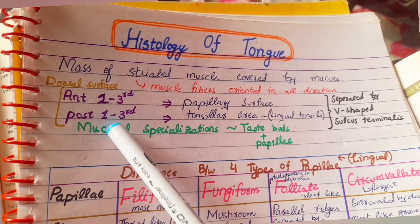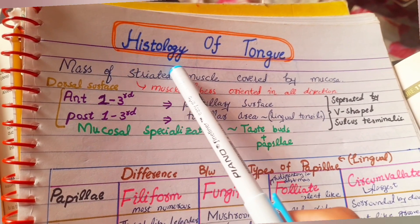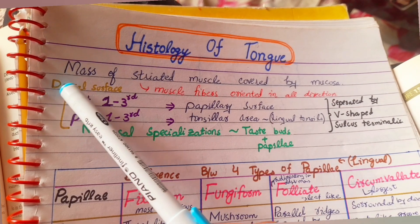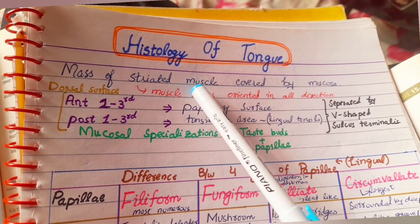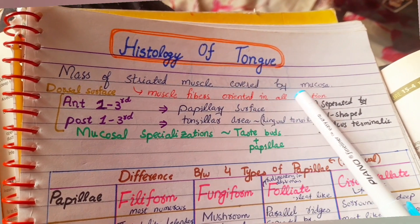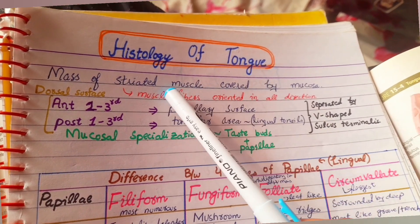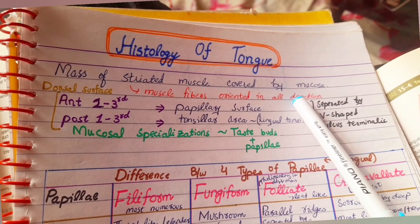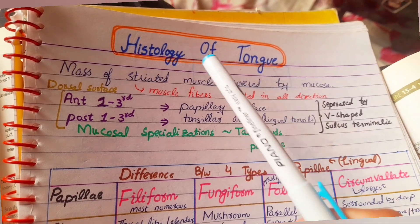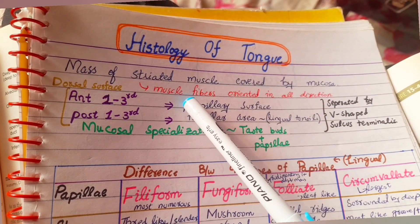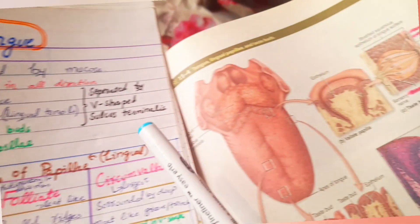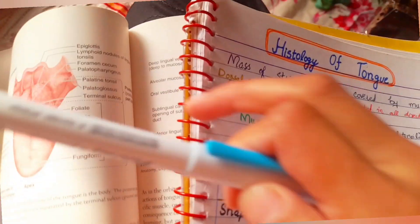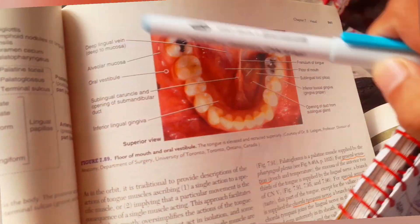We will learn about histology of the tongue. The tongue is a mass of striated muscle that is covered by mucosa, and muscle fibers are oriented in all directions. The tongue has two surfaces: the dorsal surface and the ventral surface.